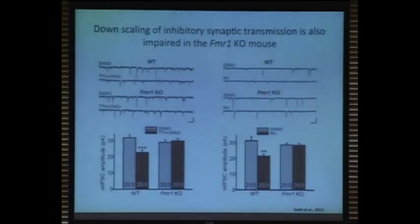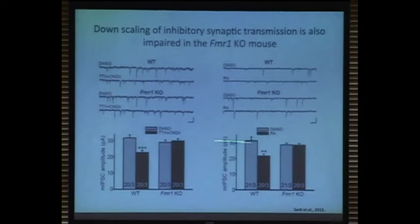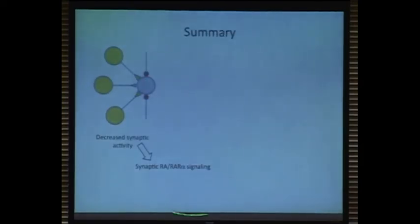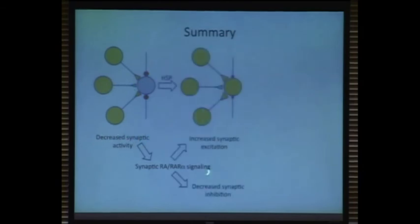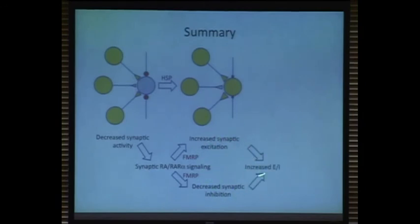Additionally, another form of homeostatic plasticity: if you block neural activity, not only do you see increased synaptic excitation, you also see decreased synaptic inhibition — which makes sense. This can be reproduced in culture by blocking activity or applying retinoic acid directly for half an hour. But both the downregulation of synaptic inhibition and the upregulation of excitation are also missing in the Fragile X knockout mice. In summary: decreased activity engages synaptic RA signaling, which enhances excitatory synapses and weakens inhibitory synapses. Both processes require FMRP. As a result of increased E and decreased I, we have an increased excitation-to-inhibition ratio that redefines plasticity rules and allows the system to rebalance and maintain learning capacity.